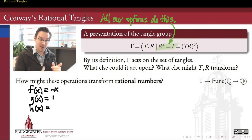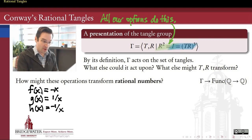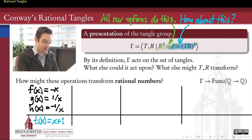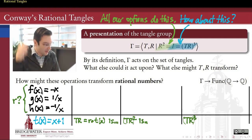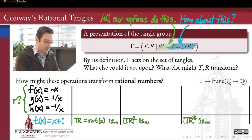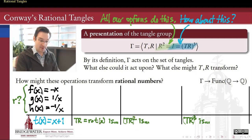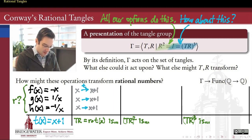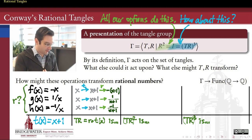To determine which candidate to use, we need it to satisfy not just r² = identity, but also the other key relation: the composition of T and R done three times gives the identity. We'll compose each candidate with t to get what TR looks like, then compose TR with itself three times. Applying t first gives x + 1. Composing each candidate with x + 1 gives: −(x+1) for f, 1/(x+1) for g, and −1/(x+1) for h.